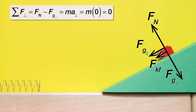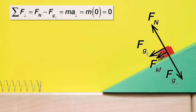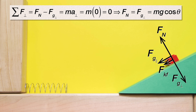The acceleration in the perpendicular direction equals zero because the block isn't moving perpendicular to the incline. So the force normal equals the force of gravity perpendicular, which equals mass times the acceleration due to gravity times the cosine of the incline angle. We can put that equation into our equation holster — no reason to substitute in numbers.